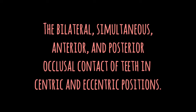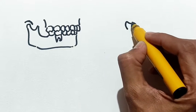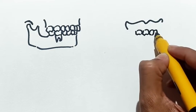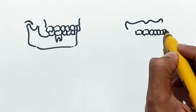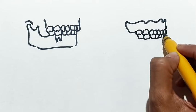Balanced occlusion is defined as the bilateral simultaneous anterior and posterior occlusal contact of teeth in centric and eccentric positions. What does that mean? Let's understand by example. Balanced occlusion is given in complete denture. Suppose this is our complete denture in centric occlusion. Remember, centric occlusion and maximum intercuspation are the same in case of complete denture.